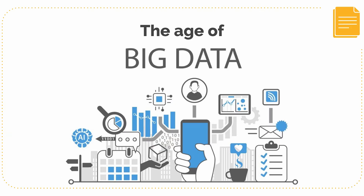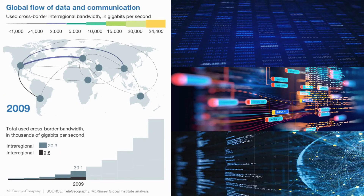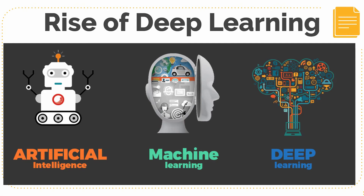Omics can also be classified as a huge part of big data. Big data is a field that allocates ways to analyze, systematically extract information from, and deal with datasets that are too large or complex to be handled by traditional data processing application software. Relating to the age of big data, omics, which is made up of high dimensional and complex structure, has made itself no longer applicable for conventional machine learning algorithms.